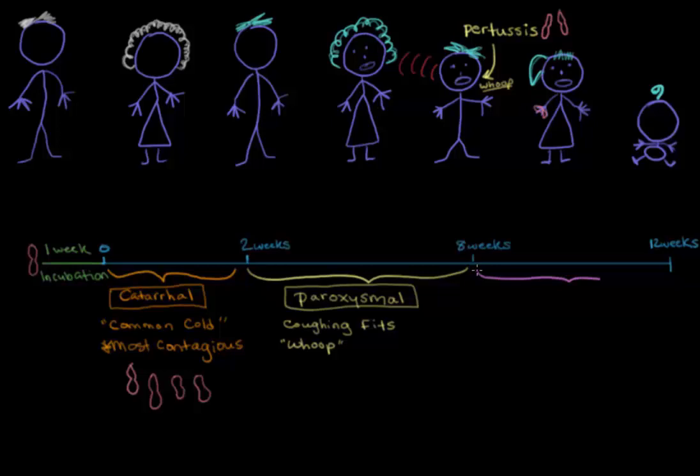But finally the convalescent stage is reached at weeks eight to twelve. Convalescence literally means recovery from an illness, and that's exactly what the body's doing during this time. The infection has been cleared from the body and the body now needs to heal from the respiratory tract infection and damage. Over time the frequency and intensity of the coughing will go away, but it takes a really long time, and it's the reason that some cultures call pertussis the 100-day cough.